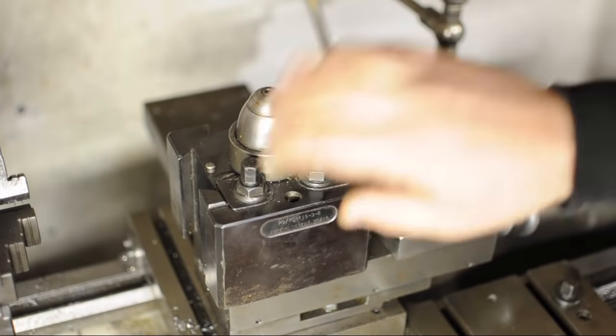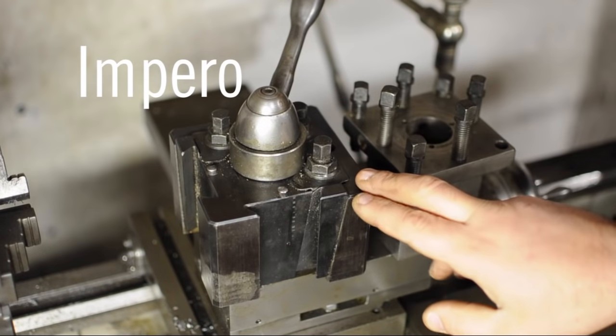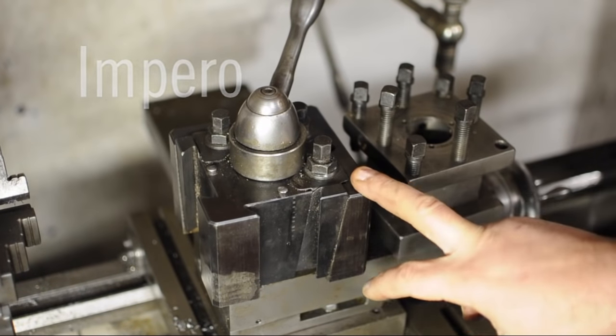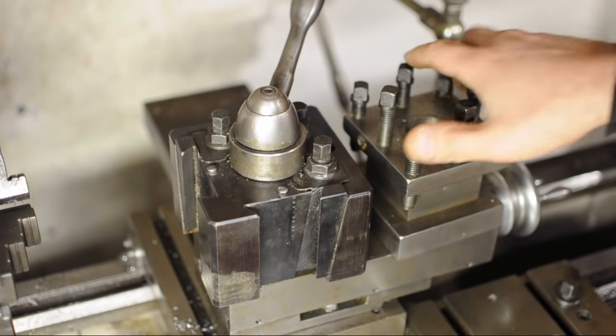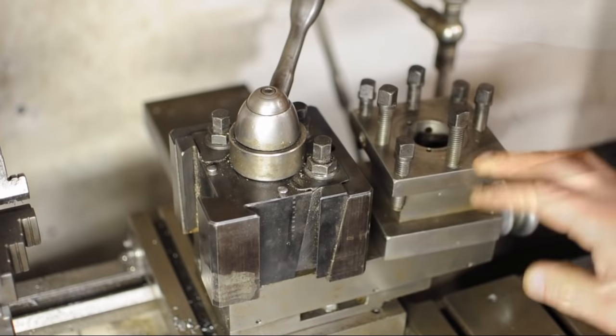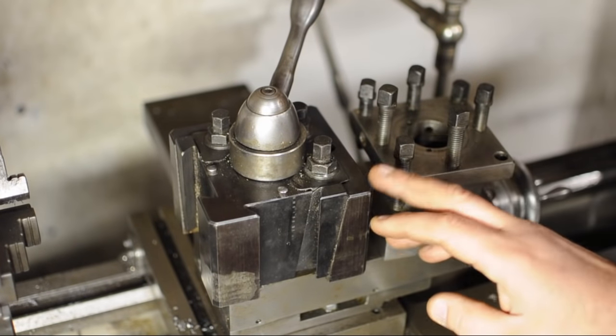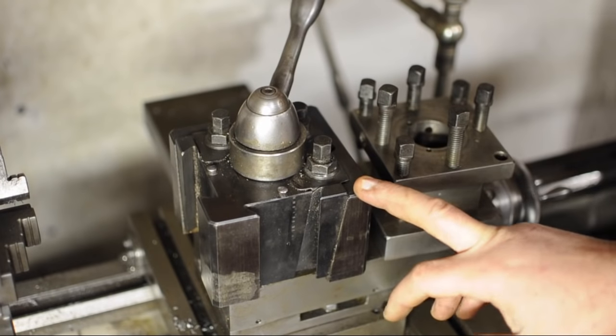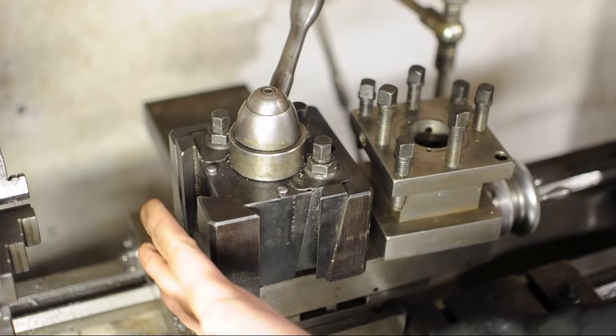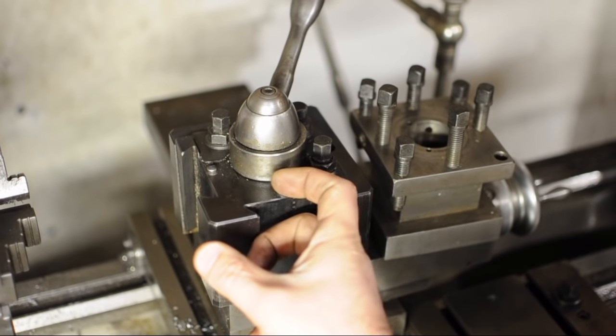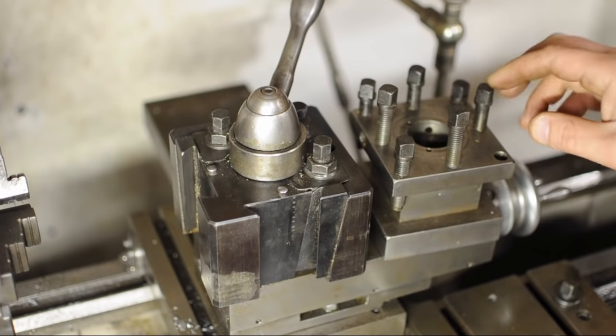Here's my quick change tool post. It's an Impero, Italian. Next to it is the original Colchester four-way tool post I got with the machine. At first they maybe don't look too different size-wise, but by the time you get a tool on the four-way, the overhang from center is maybe two inches, two and a quarter inches, whereas here it's more like an inch or so.